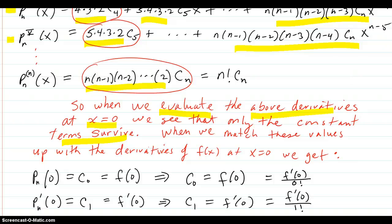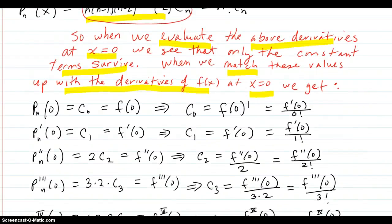So then, when we match these values up with the derivatives of f(x) at x equals zero, as we did before in the other videos, we have the polynomial at zero is C_0, which has to match up with f(0), so that implies C_0 equals f(0). And I rewrote that in the pattern as f(0) over zero factorial, because zero factorial is one, just to see the pattern.